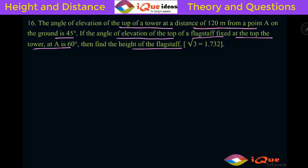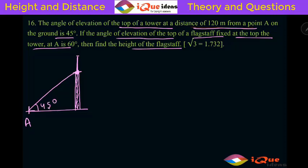First, we need to understand the diagram properly. Let's say this is the ground. This is the tower, and on the tower there is a flagstaff. So this is the flagstaff and this is the tower. It says 120 meters from a point A on the ground. From point A, the angle of elevation of the top of the tower is 45 degrees, and the angle of elevation of the top of the flagstaff is 60 degrees — so this total angle is 60 degrees.